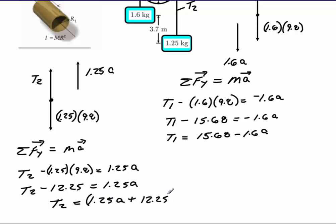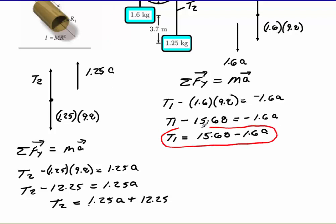Solving for T2: T2 equals 1.25 times A plus 12.25. So now we have T1 and T2 both expressed in terms of A.